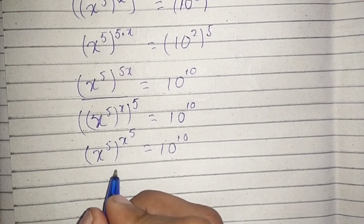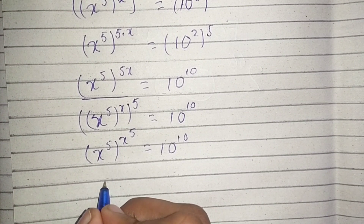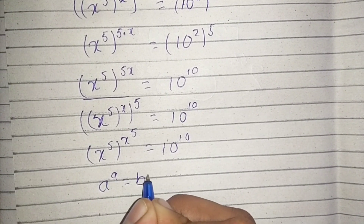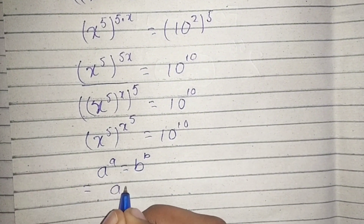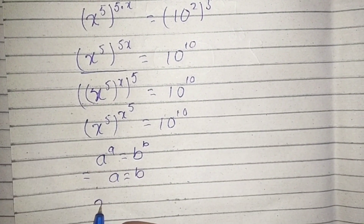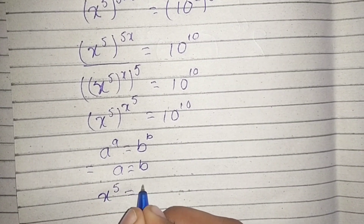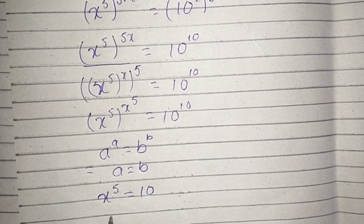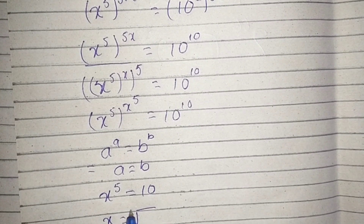Now we can see that it resembles the form a^a = b^b, which implies a = b. So here we have x^5 = 10, and therefore x is equal to the fifth root of 10.